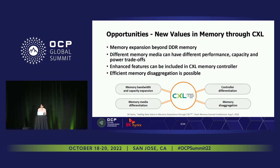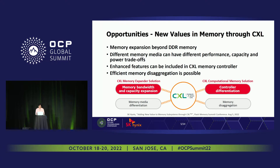Last but not least, thanks to CXL supporting memory semantics and cache coherency, memory disaggregation has become more viable than ever. Out of these four values, the two highlighted are the focus of this talk: memory bandwidth and capacity expansion, relevant to our CXL memory expander solution, and controller differentiation, relevant to our CXL computational memory solution.